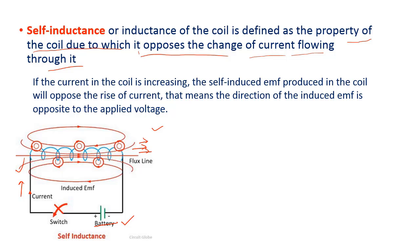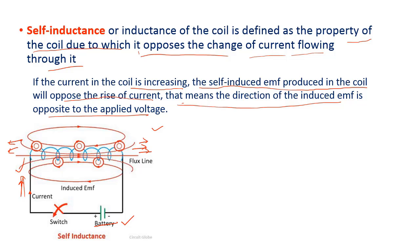If the current in the coil is increasing, the self induced EMF produced by the coil will oppose the rise of the current. The direction of the induced EMF is opposite to the applied field — if my applied direction is in one direction, the induced EMF is opposite to it.